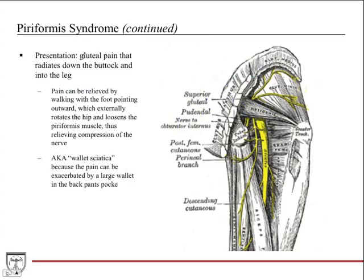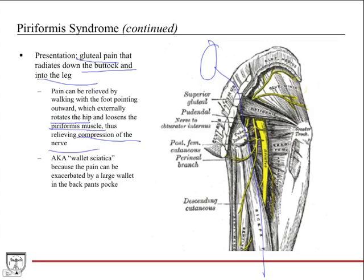The presentation is usually gluteal pain that radiates down the buttock and into the leg. Pain is often relieved by walking with the foot pointing outward — laterally or externally rotating the hip — which loosens up the piriformis muscle and relieves compression of the nerve. This is also known as wallet sciatica because the symptoms are similar to sciatica from lumbar disc herniation, and the pain can theoretically be exacerbated by a large wallet in the back pants pocket compressing this region.